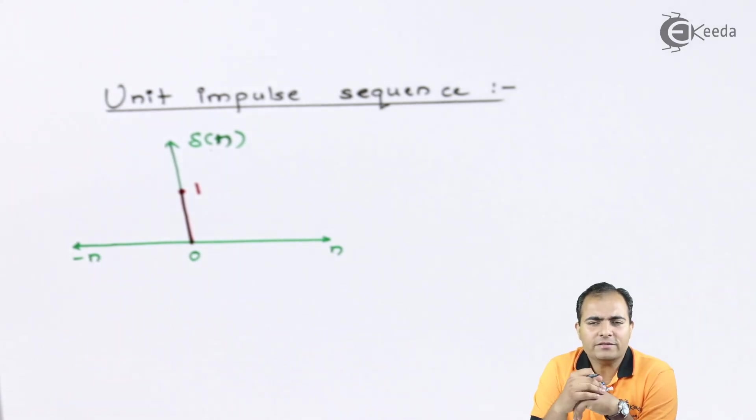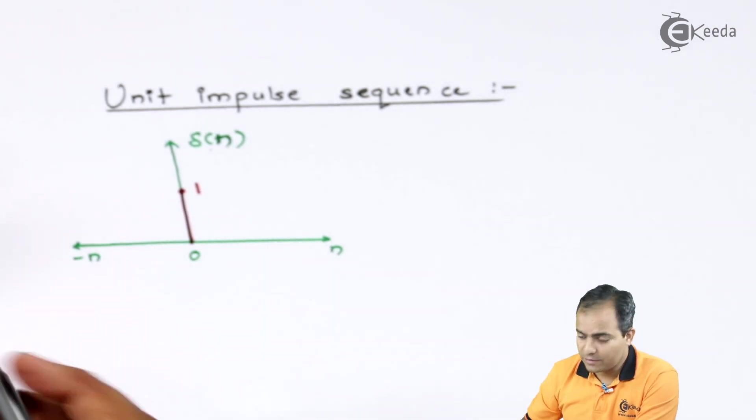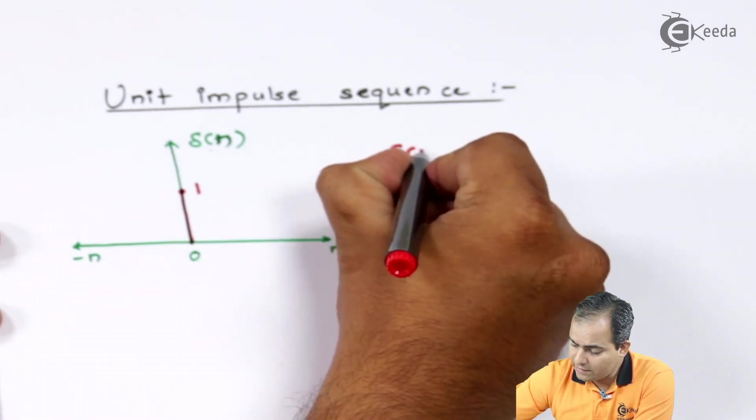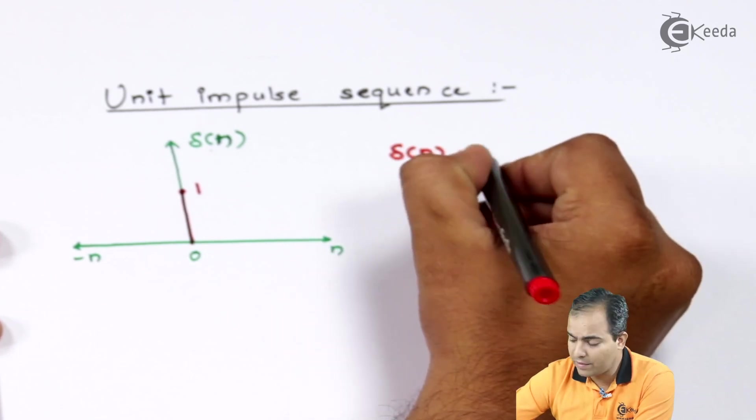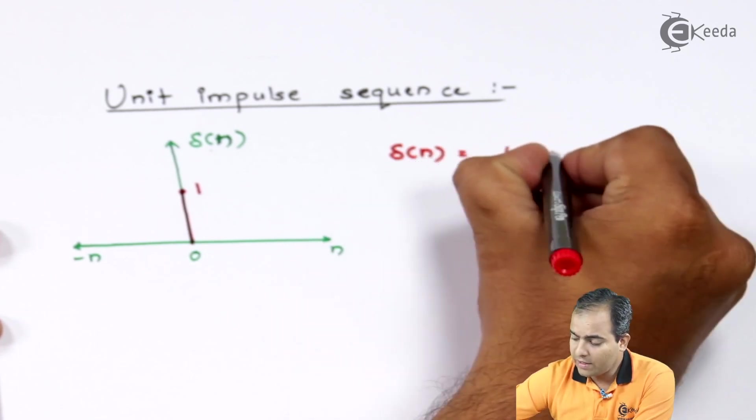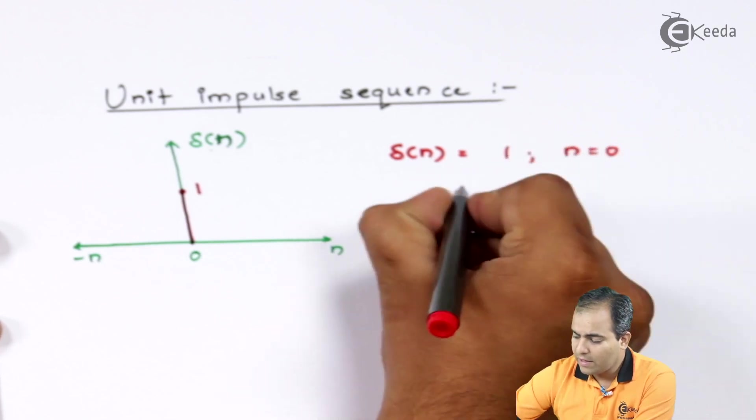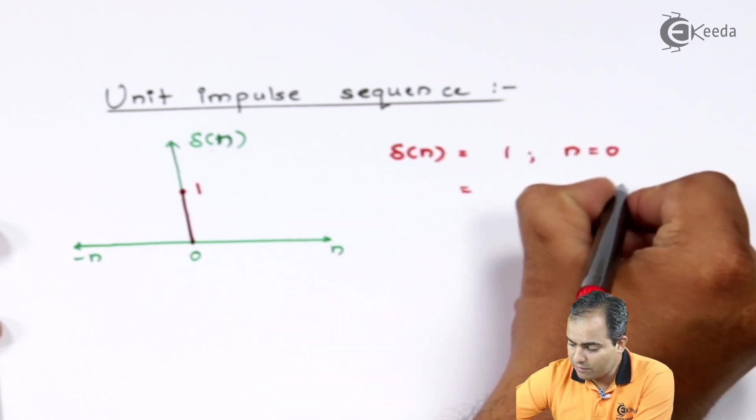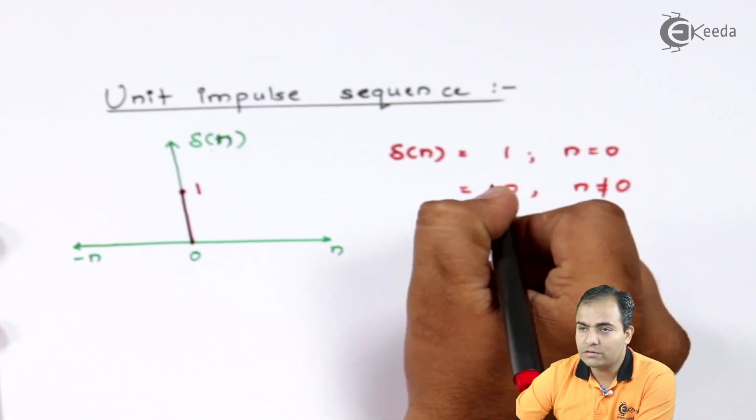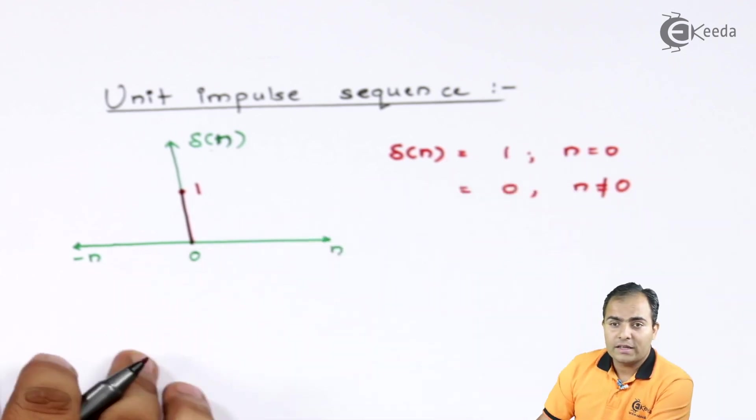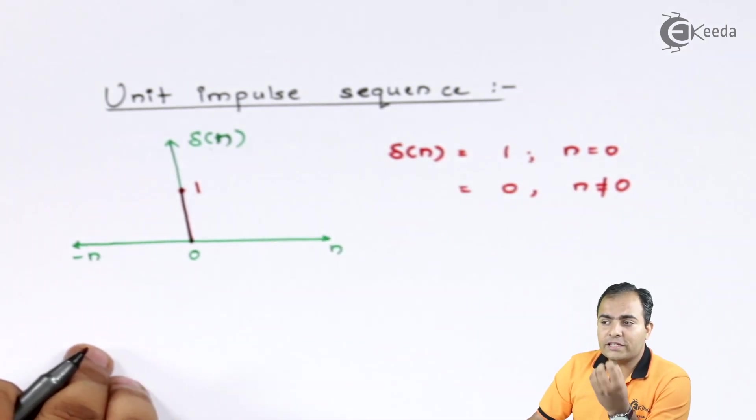So δ(n) is represented by 1, having amplitude 1 for n equals to 0, and when n is not equals to 0, amplitude is 0. Now, in just few seconds before, what I said, we have to produce a sequence.